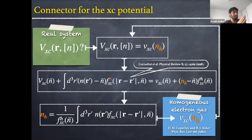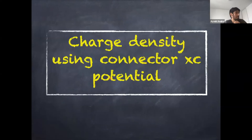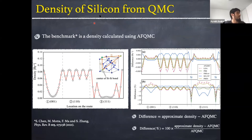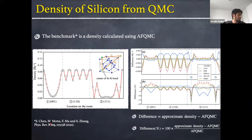At first, I tried this approximation for toy systems, and the results were promising. This motivated me to implement it in a DFT code to calculate the charge density. Now let's see the connector density results. We need to define the benchmark: our reference density is taken from a study giving the density for silicon calculated using quantum Monte Carlo. They show the density along a specific route, starting from the center of the silicon bond, going along [001] to the other bond, then along [110] to the other bond, and back to the initial point.